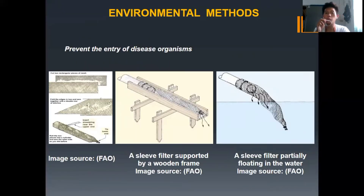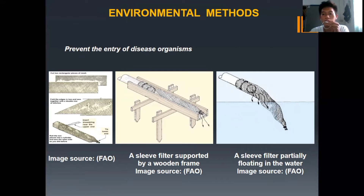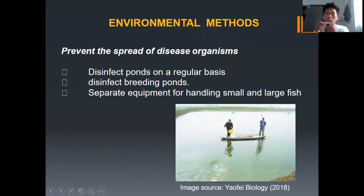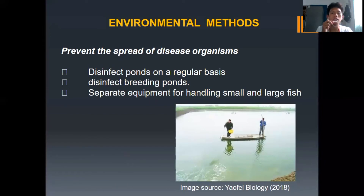Prevent the entry of disease organisms. To construct a sleeve filter, cut two rectangular pieces of mesh, fold the edges into two and sew together with a double row of stitches. Roll the two pieces into a cylinder and sew the open side. Insert a drawstring near the upper end and tie the lower end. The sleeve filter is supported by a wooden frame and is partially floated in the water. To prevent the spread of diseased organisms, disinfect ponds on a regular basis, disinfect breeding ponds, and separate equipment used for handling small and large fish.